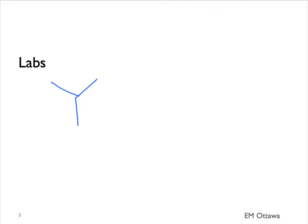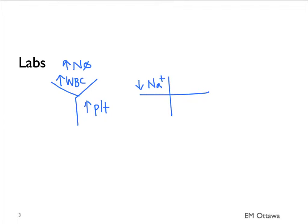In patients with pneumonia we expect their white blood cell count to go up together with their neutrophils. We also expect their platelets to go up as part of an acute phase reaction. In terms of their electrolytes, sicker patients might have hyponatremia. They may also be acidotic and might have impaired renal function.